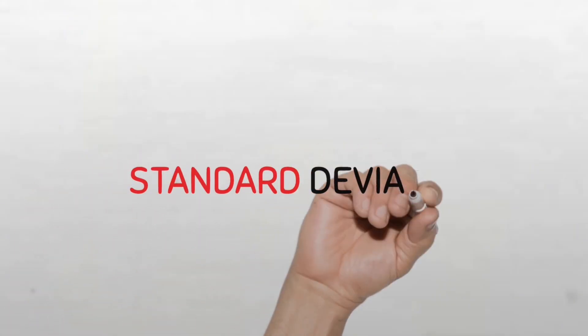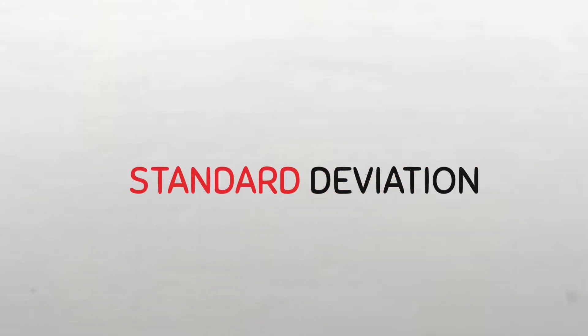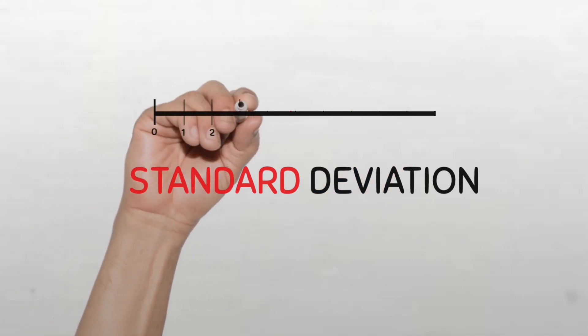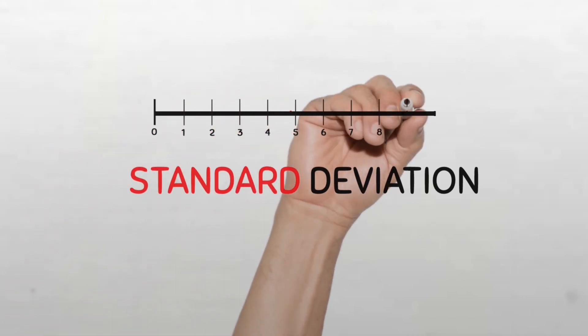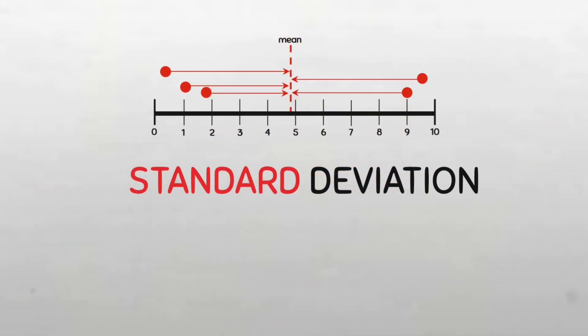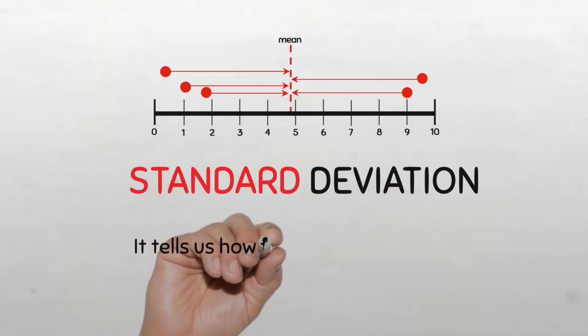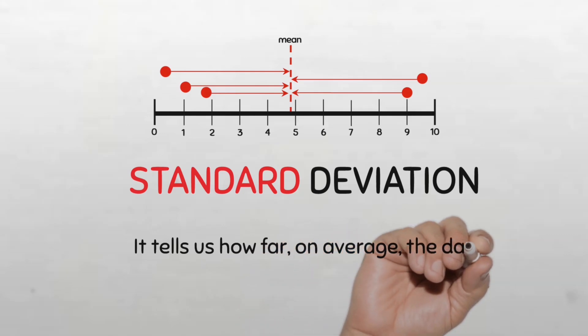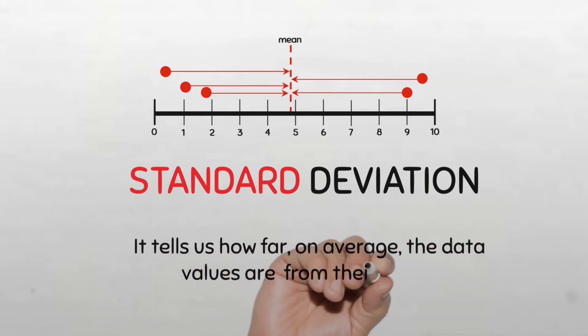Standard deviation is a statistical measure that quantifies the variability or dispersion of a set of data around its mean. It tells us how far on average the data values are from their mean.